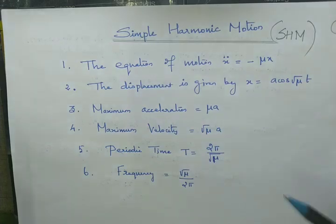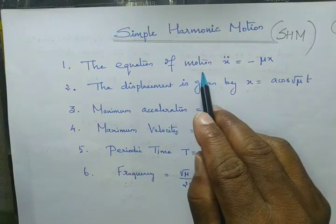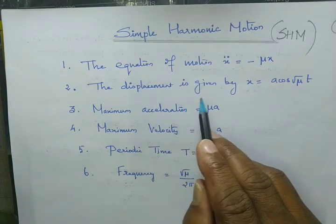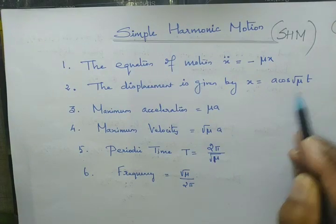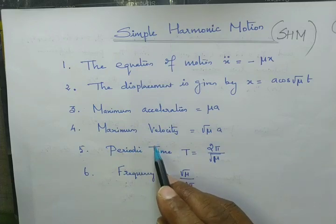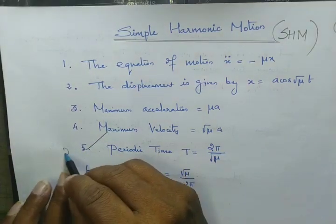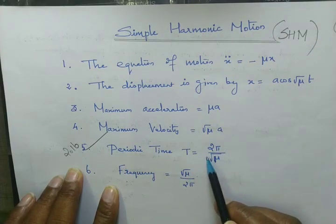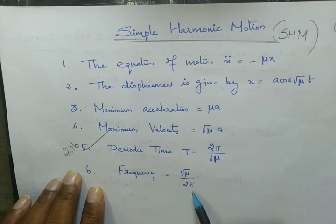These are the standard results. First, the equation of motion: x double dot equal to minus mu into x. The displacement in SHM is given as x equal to a cos of root mu into t. Maximum acceleration is mu into a, maximum velocity is root mu into a. Periodic time t equal to 2 pi by root mu, and frequency is root mu by 2 pi.